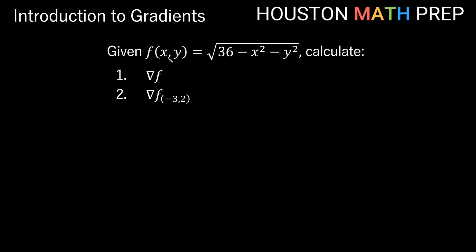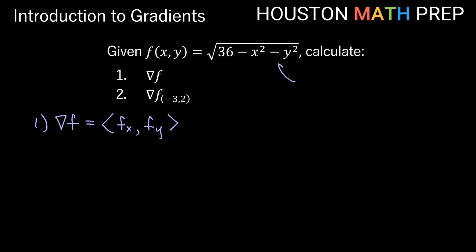Looking at one more example: f(x, y) = √(36 - x² - y²). We'll find del f in general and then del f at the point (-3, 2). Remember del f is the vector with partial fx and partial fy as components. We can think of this function as (36 - x² - y²) to the one-half power. To find the partial with respect to x, since x appears inside, we'll need the power rule and chain rule.